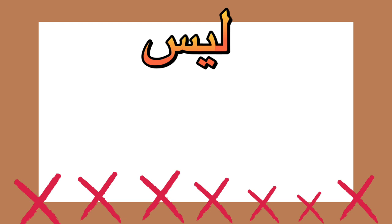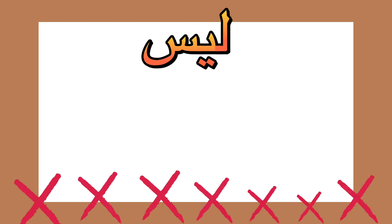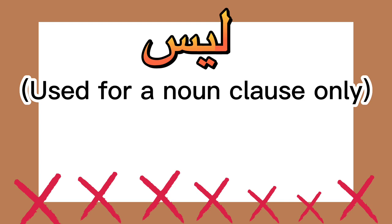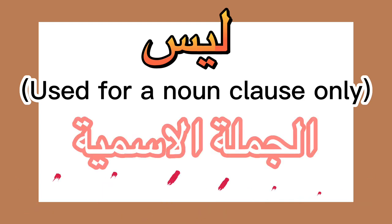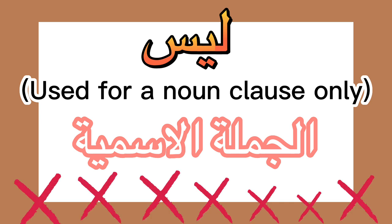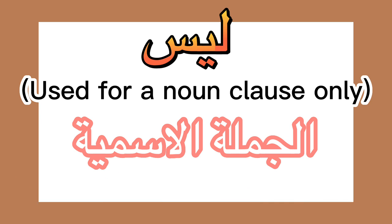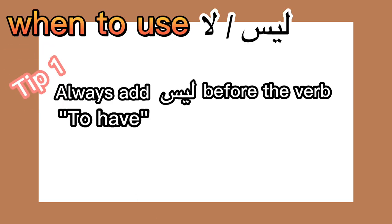Moving to another Adāt al-Nafi: ليس. You might ask why not just use لا instead. Each Adāt al-Nafi is used based on a different function. For ليس, we add it only when the sentence is a noun clause — in Arabic called الجملة الإسمية. Tip one: we add ليس before the verb 'to have,' which we learned in a previous lesson. If there is a verb 'to have,' we add ليس.